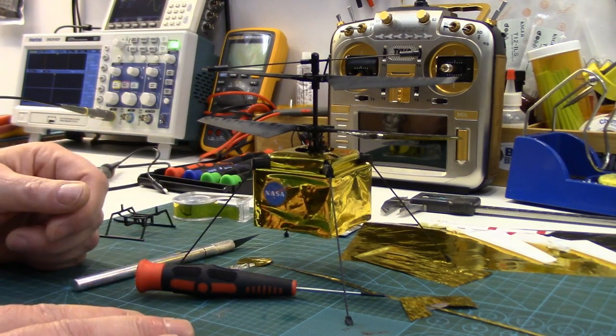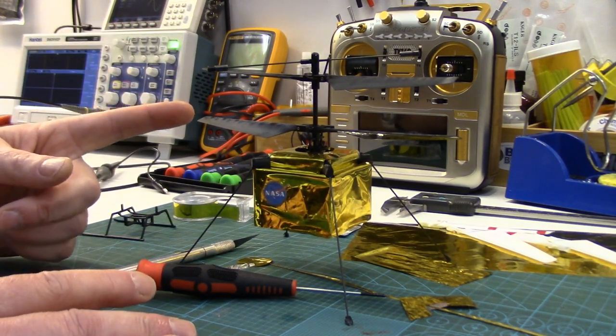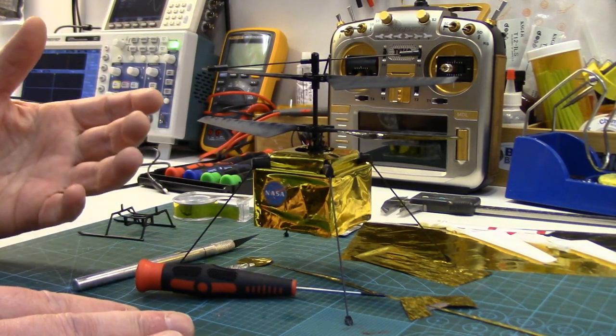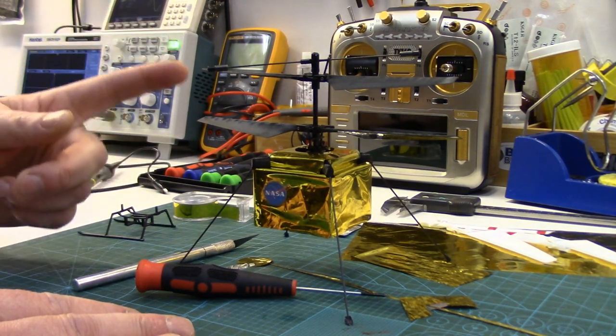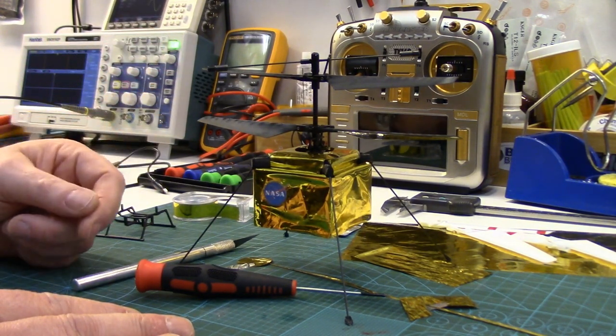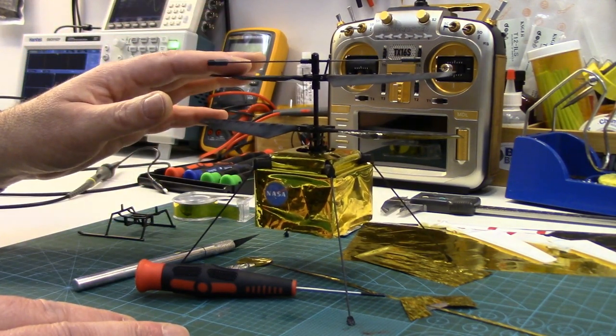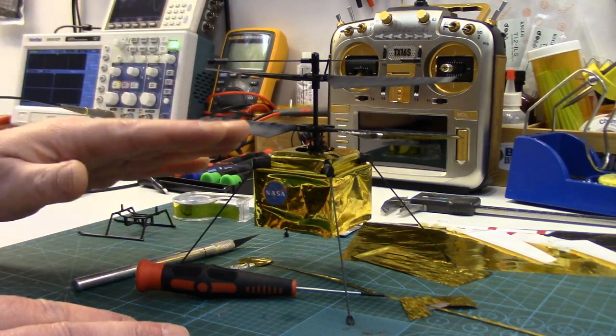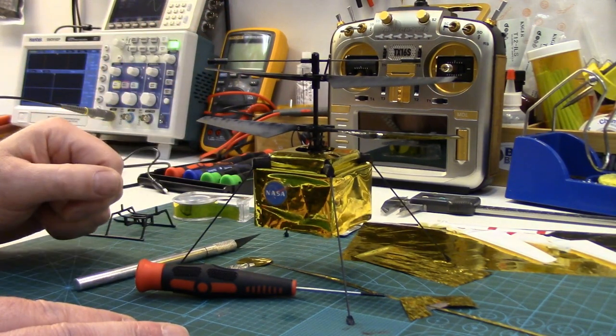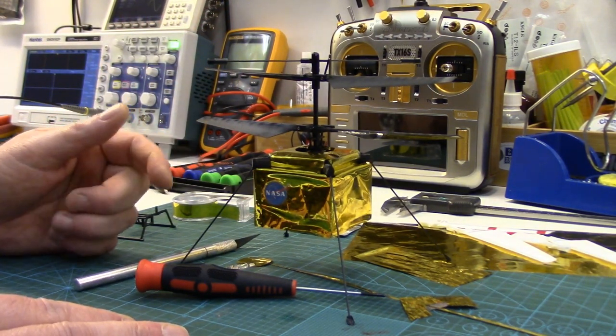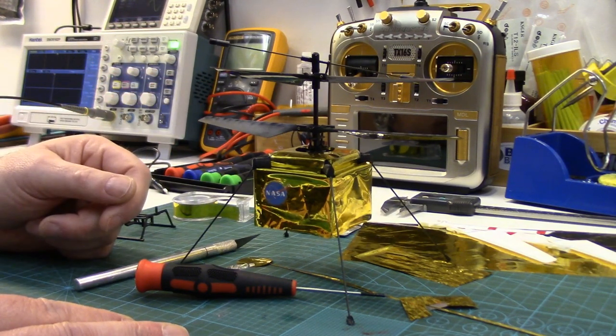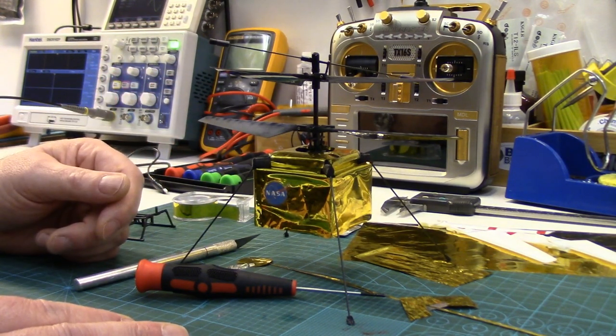We already know the Ingenuity is using a coaxial rotor system which was chosen primarily for its lift efficiency. For any of you who have flown little micro coaxials like this before, you know just how efficient they are. 100% of the power is going towards the lift. There's no tail rotor using up power to counter the reactive torque off the main rotor. The counter rotating blades on the coaxial are nullifying the torque reaction from each.